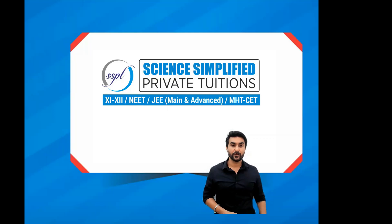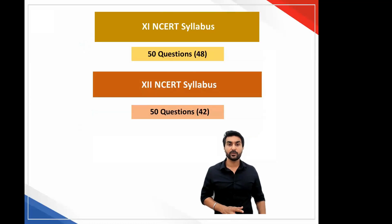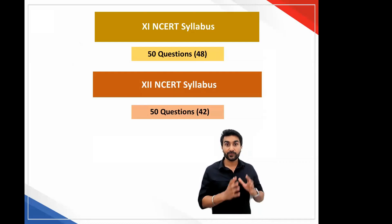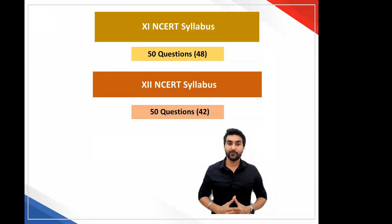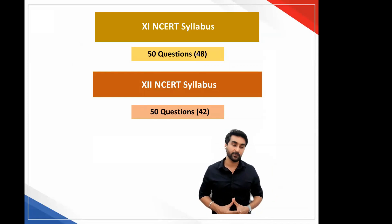So we start with the discussion and the analysis of the 2021 paper. The first important information to note is that this year the distribution of questions was equal — you had 50 questions coming from the 11th NCERT textbook and 50 questions coming from the 12th NCERT textbook.